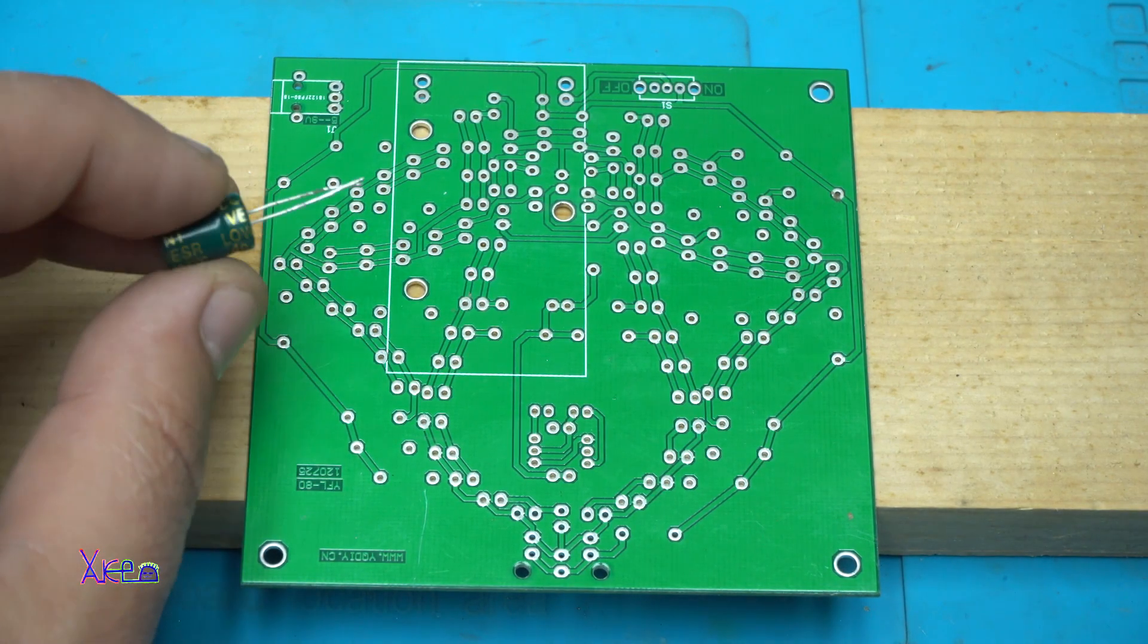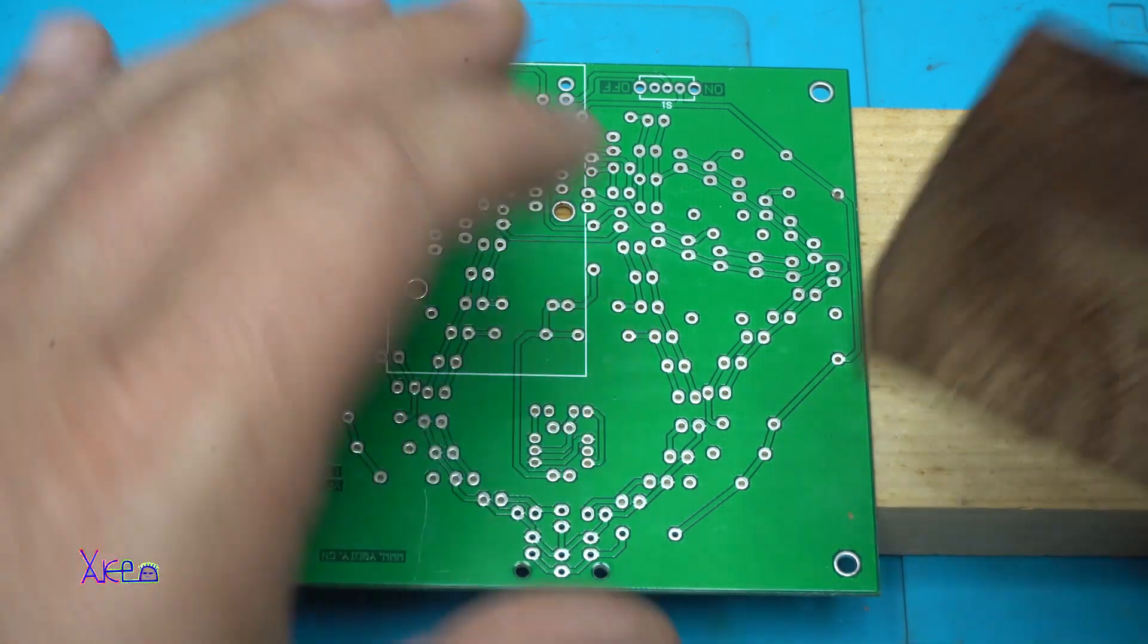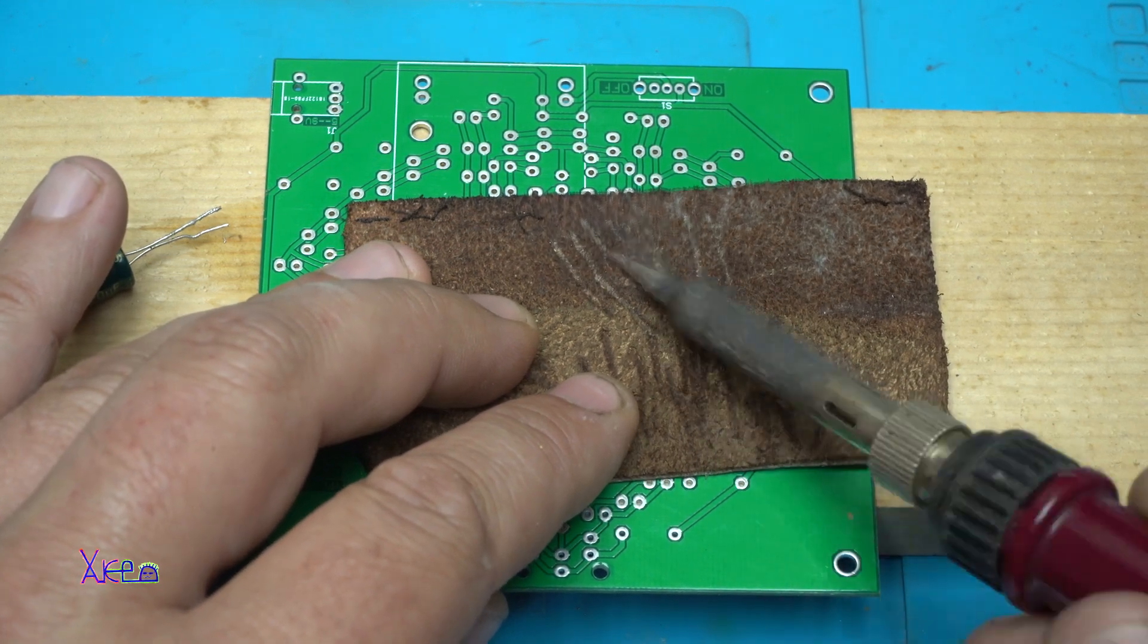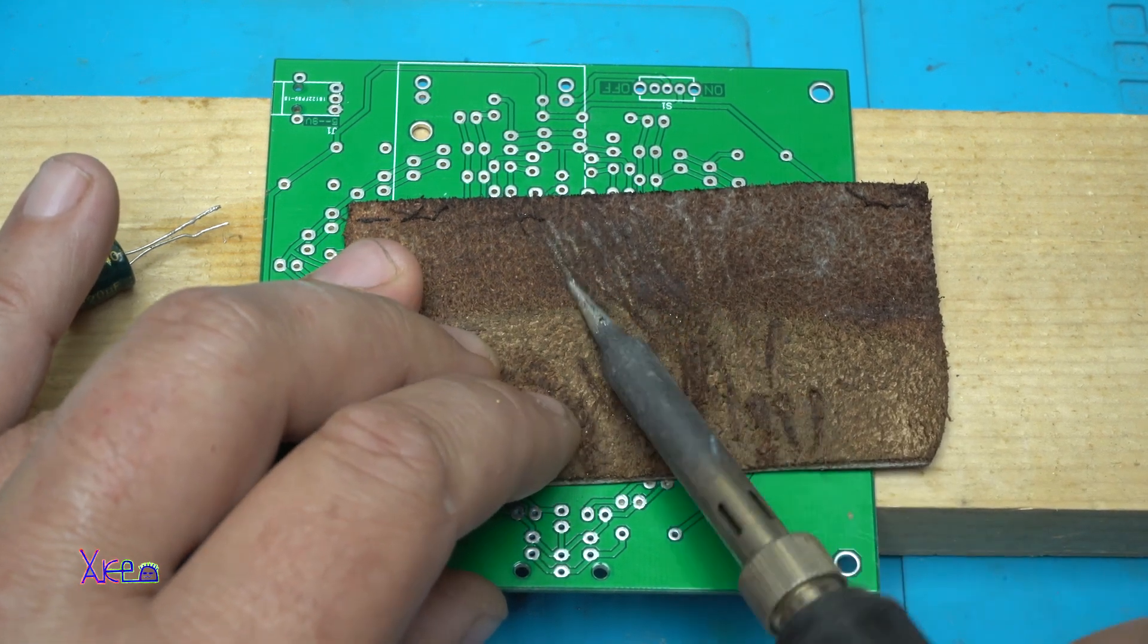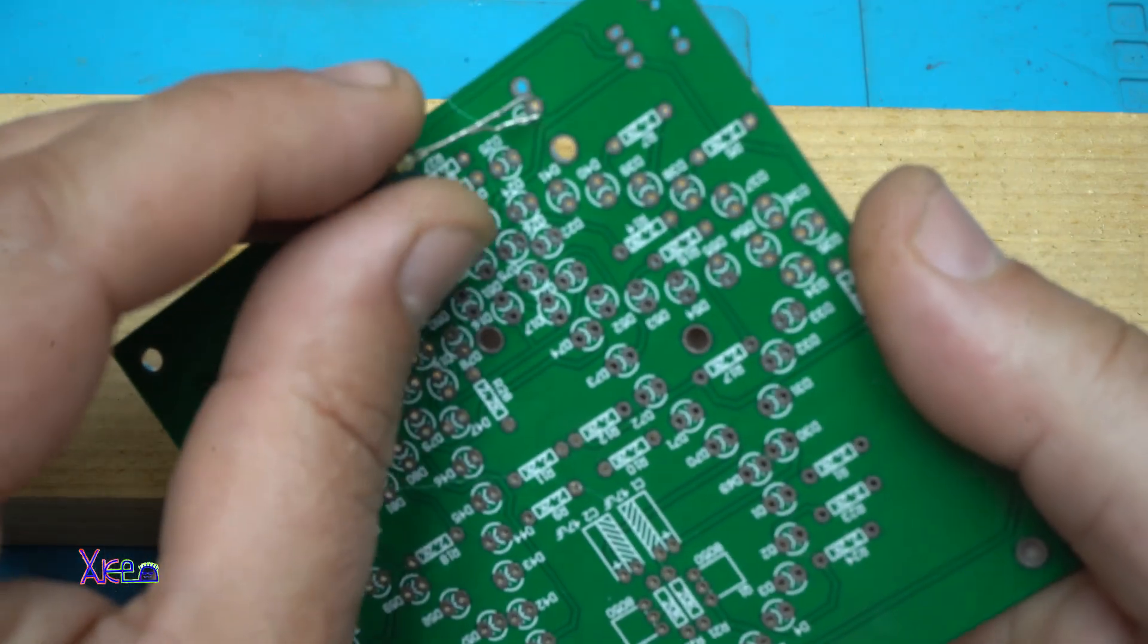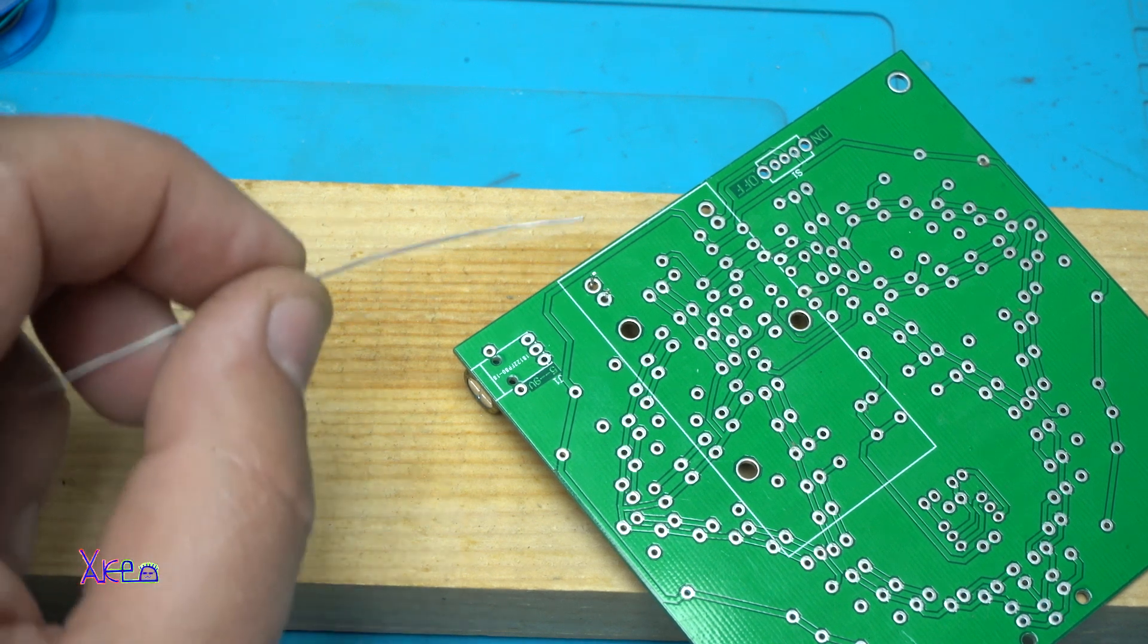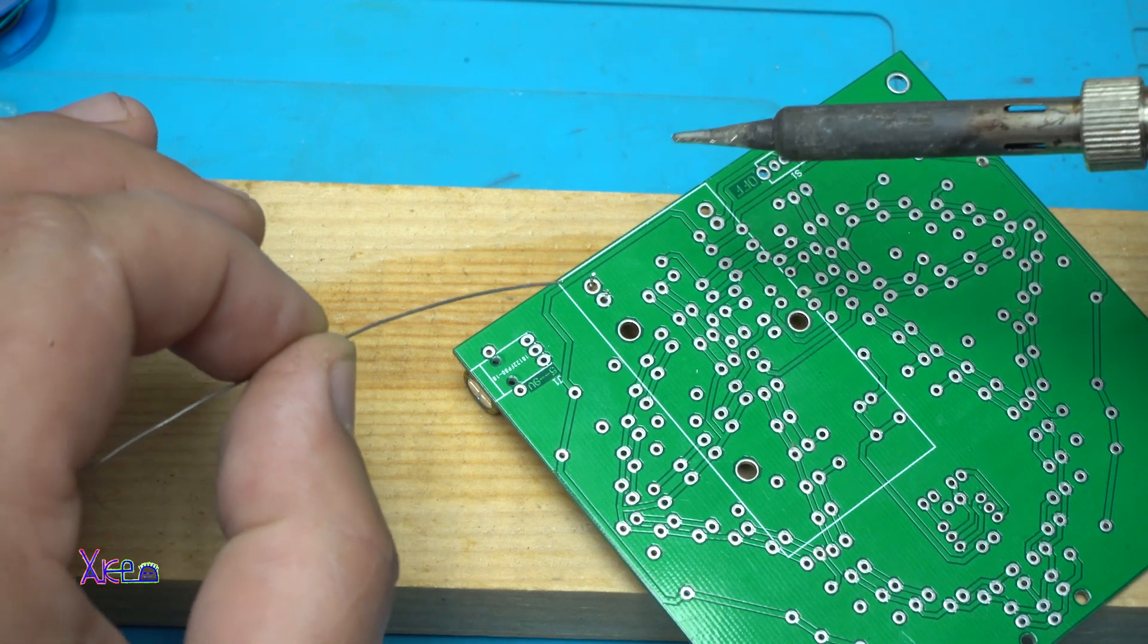Now I am gonna show you how you can easy solder a component to the PCB board. But before that, clean your soldering iron tip. As I said, you can use real wet leather. Put some water. This is clean. This is the easiest way to solder a component to the PCB board.